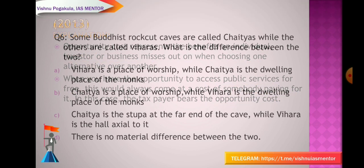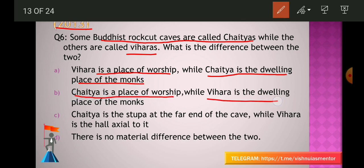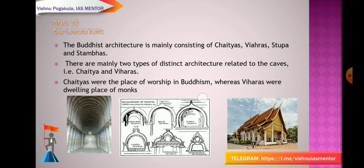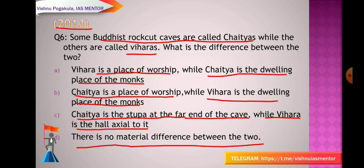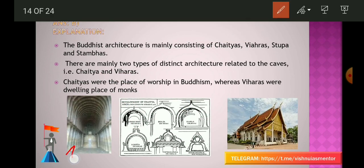From the 2013 question paper: Some Buddhist rock-cut caves are called chaityas while others are called viharas. What is the difference? Options: (A) Vihara is a place of worship while chaitya is a dwelling place of monks, (B) chaitya is a place of worship while vihara is a dwelling place of monks, (C) chaitya is a stupa at the far end of the cave while vihara is a hall axial to it, (D) there is no material difference. The answer is B. A picture of chaitya and vihara, and the development of the chaitya arch, are provided.